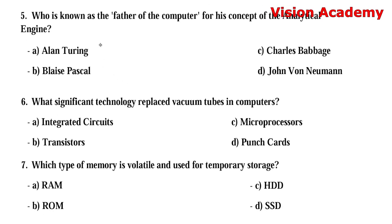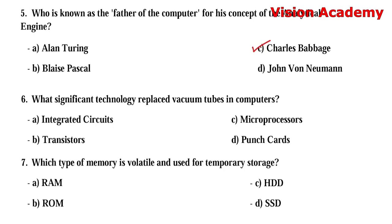Question number 5: Who is known as the father of computer for his concept of the analytical engine? Option A: Alan Turing. Option B: Blaise Pascal. Option C: Charles Babbage. Option D: John von Neumann. The right answer is Option C, Charles Babbage.